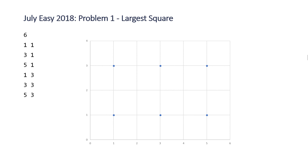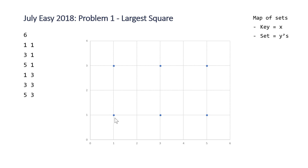The way we're going to solve this problem is by storing these points in a map of sets where the key in the map is going to be the x value — so here it's going to be 1, 3, and 5 — and the set that corresponds to that key is going to be the corresponding y values for each of the x values. Because this example is a bit trivial, each of those sets is going to be the same — just the y values 1 and 3.